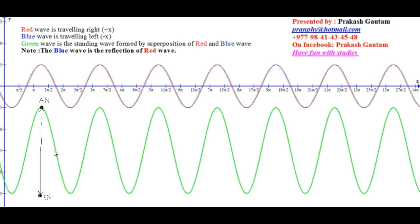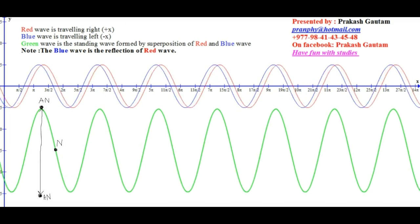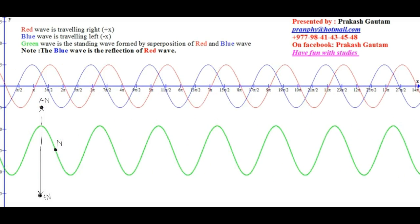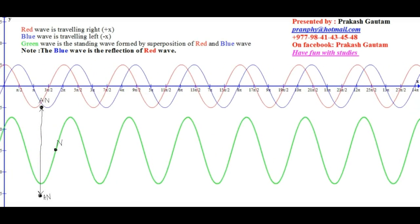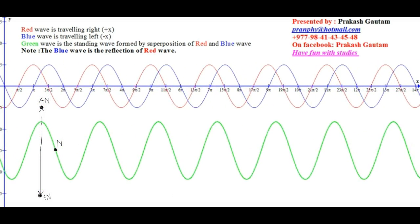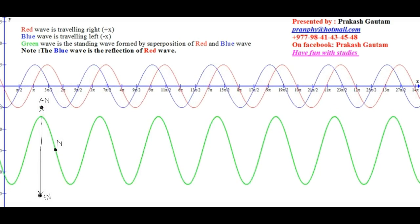And yet other particles, like the one right about here, those are nodes. This is the location of a node, because this particle doesn't move at all. So let's watch that. This particle stays in the same spot while the others move, antinodes and nodes.